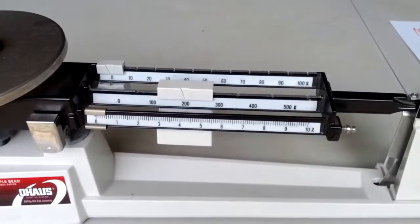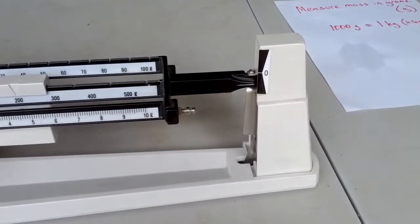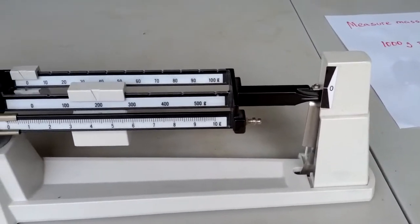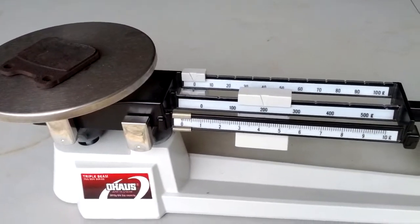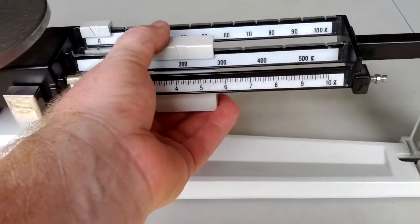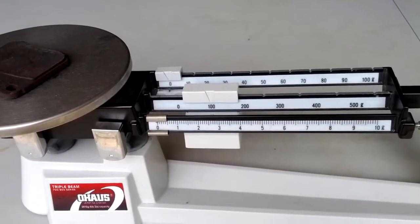When I slide it to 200, notice how the balance went all the way down. That's too far. That means this brake pad has a mass of less than 200 grams. So I need to go back to 100. So I'm going to slide that back over to the 100 mark.